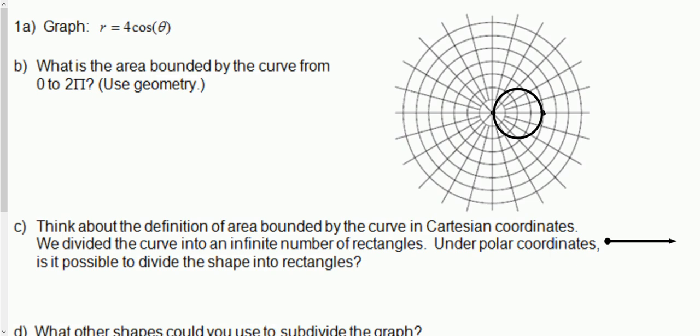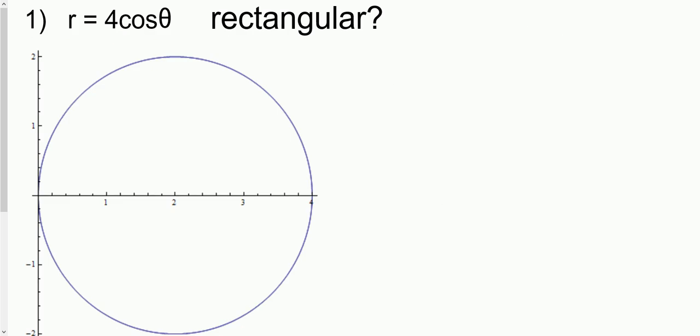So here we have a picture of r. We have the equation r = 4cos(θ). This actually turns out to be a circle, and the circle goes through the pole, and it also goes through a point over here on the right that corresponds to the Cartesian plane 4 comma 0. So I ask you here, what is the area bounded by the curve? Well, based on geometry, and based on the fact that you know this is a circle, area equals πr² is our formula for area, and so obviously this is 4π.